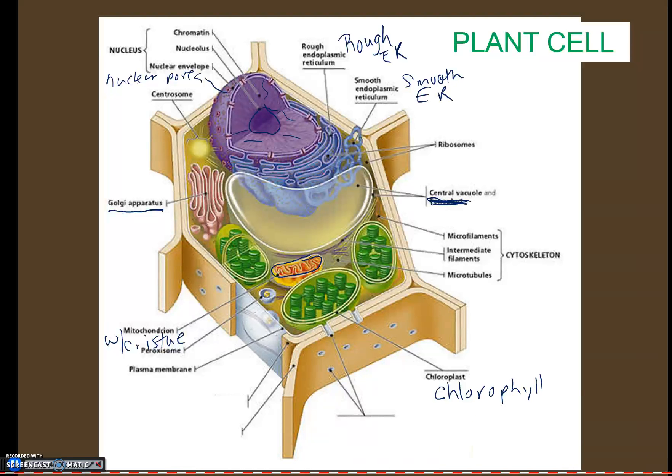Again, we're going to have the cytoskeleton, and we don't need to worry about intermediate filaments, so we're going to cross those out. An intermediate filament just means it's partially filled and partially hollow. But for now, I just want you to focus on microfilaments. Remember, those are solid protein fibers for support, and microtubules are hollow protein fibers for support.